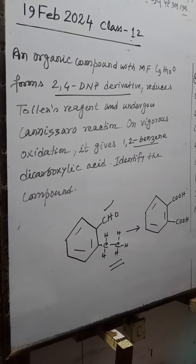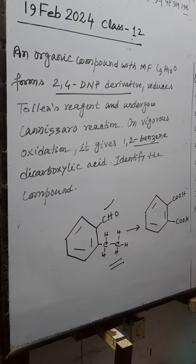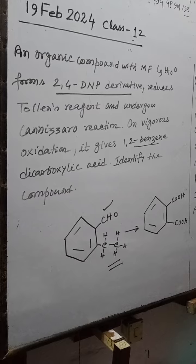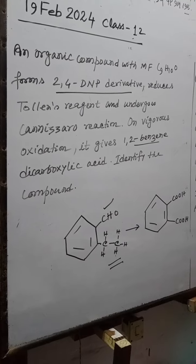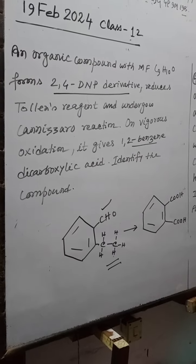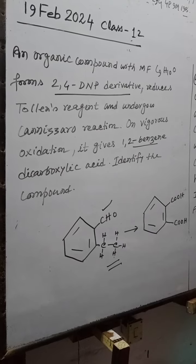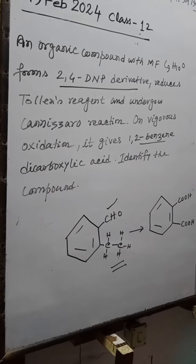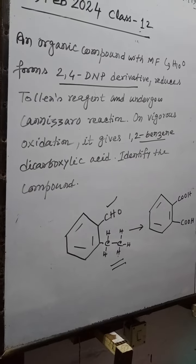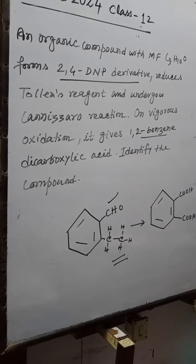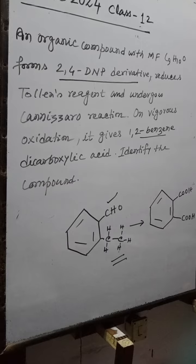An organic compound with molecular formula C9H10O forms 2,4-DNP derivatives, reduces Tollens' reagent, and undergoes Cannizzaro reaction. On vigorous oxidation, it gives 1,2-benzene dicarboxylic acid. Identify the compound.